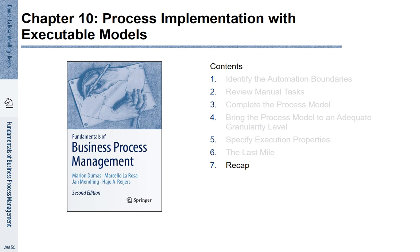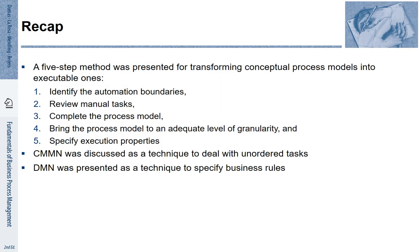Chapter 10, Section 7: Recap. In this chapter, we discussed a five-step method for transforming conceptual process models into executable ones. These five steps are: identify the automation boundaries, review manual tasks, complete the process model, bring it onto the right level of granularity, and finally specify execution properties. Along the way, we have seen how CMMN can be used as a technique to deal with unordered tasks, and how DMN can be used for specifying business rules.